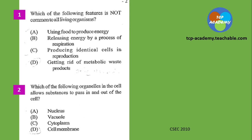For question number two: which of the following organelles in the cell allows substances to pass in and out of a cell? Think carefully as you go through the options. There are four options — don't be misled by the options that might be seemingly selected. Make your own decision.